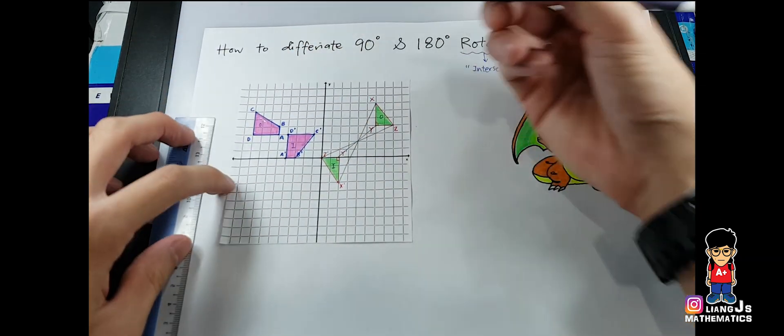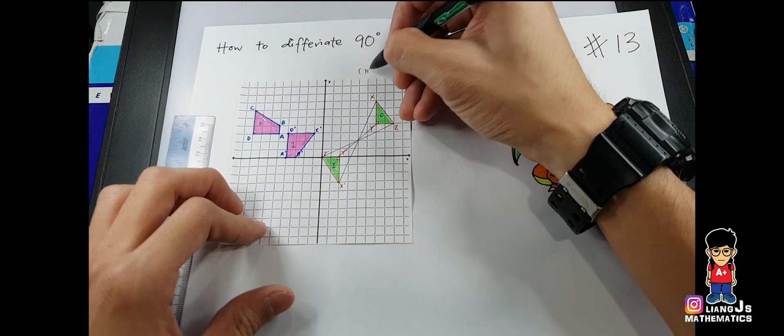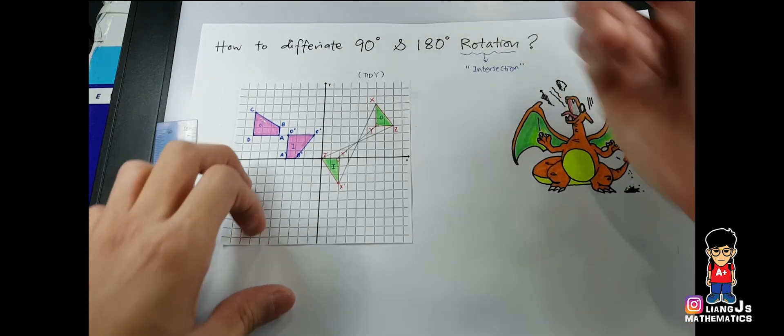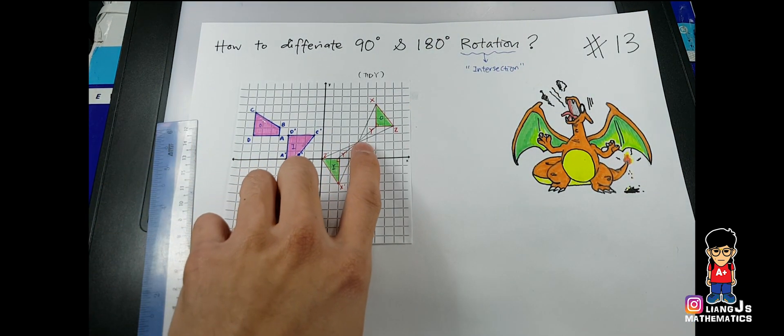And the best thing here is, can you see, it's a very tidy version. And tidy version meaning they intersect at one particular point.